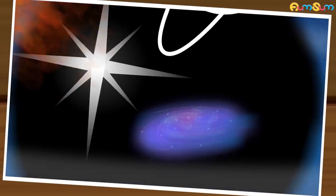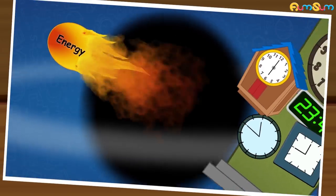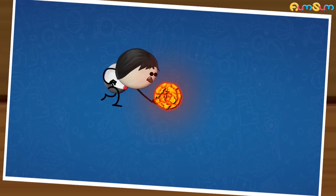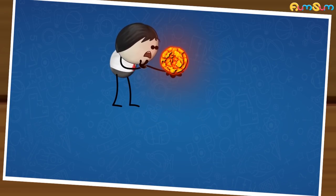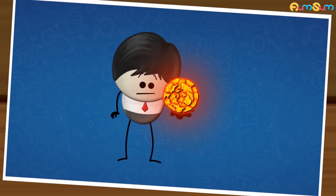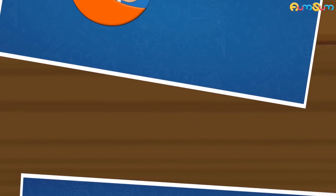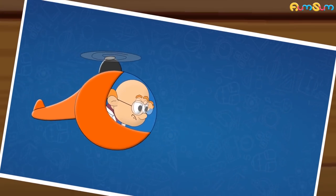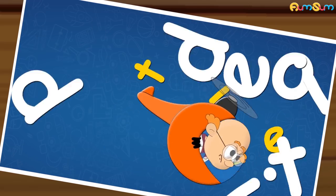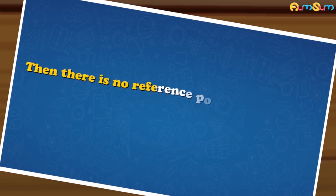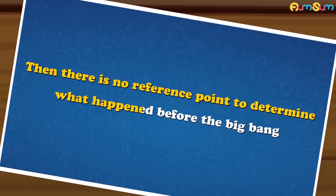Now, you must be wondering: what happened before the Big Bang at singularity? It is said that at singularity, laws of physics and time did not exist. If time did not exist, then there is no reference point to determine what happened before the Big Bang.